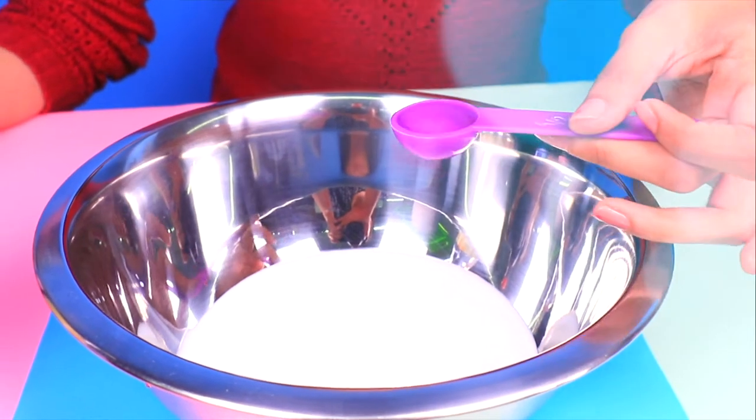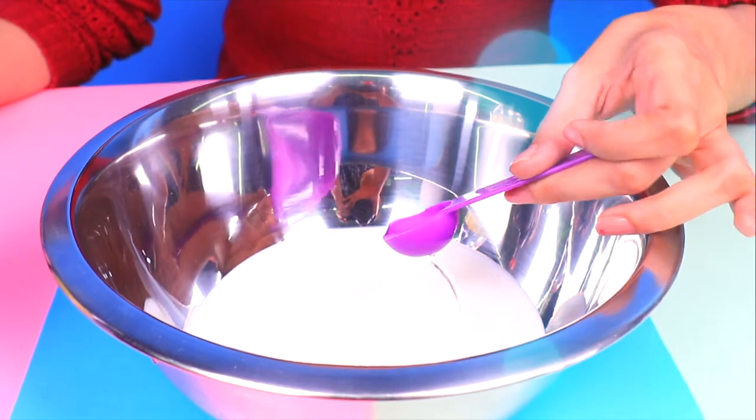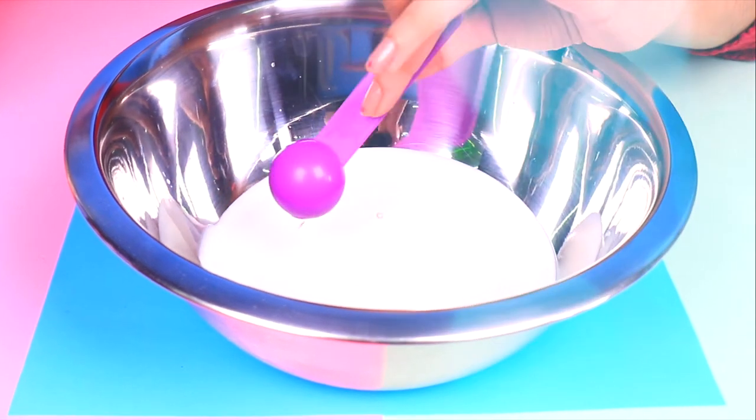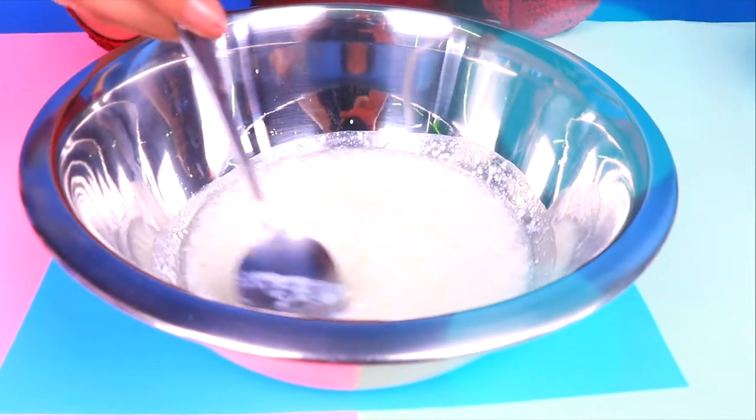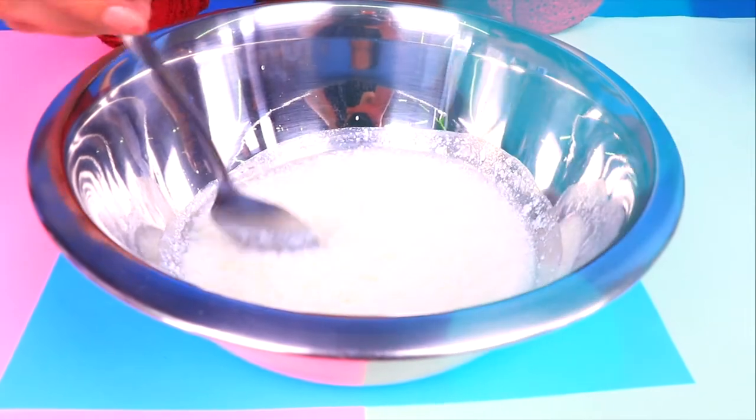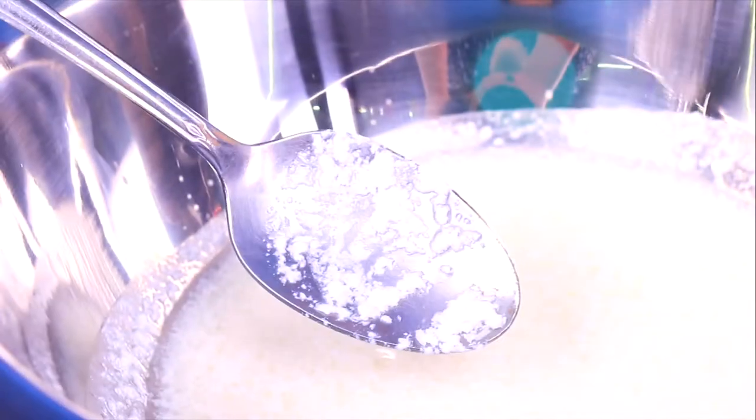Now we will put 4 tablespoons of vinegar into the bowl. We will mix it with a spoon and this is how it will look. It looks like the milk wants to separate from the vinegar. So these thick parts will start to appear and those parts are exactly what we'll need.